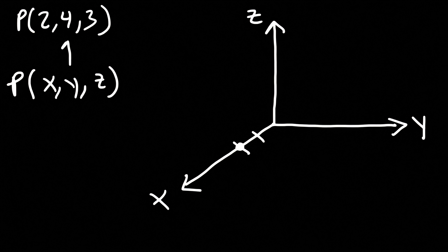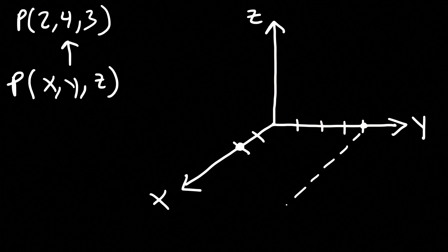Now let's plot the y-coordinate, which is 4. Counting 1, 2, 3, 4 — here it is. What I'm going to do at this point is draw a dashed line parallel to the x-axis. And then starting with the point at 2 on the x-axis, I'm going to draw a dashed line parallel to the y-axis. Where those two dashed lines intersect, that's going to be the point of interest.